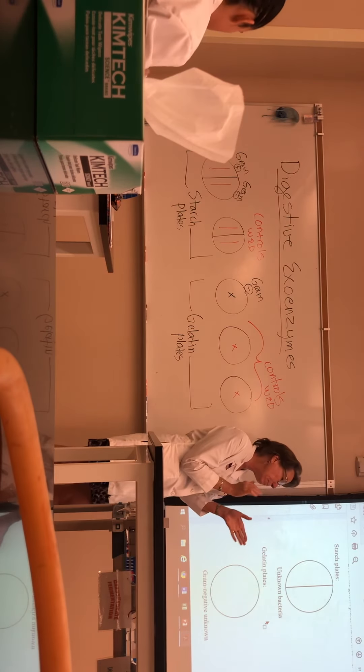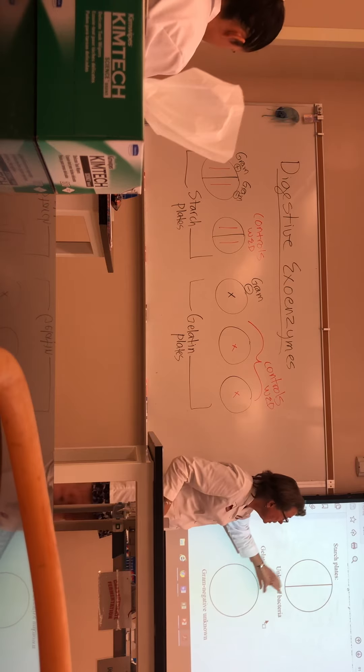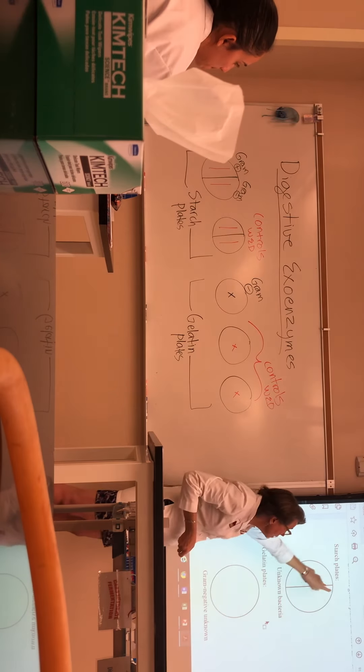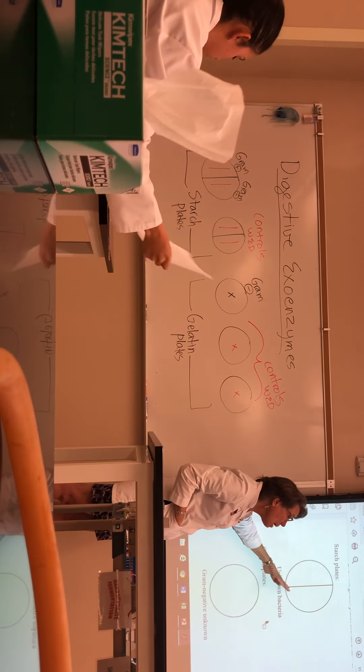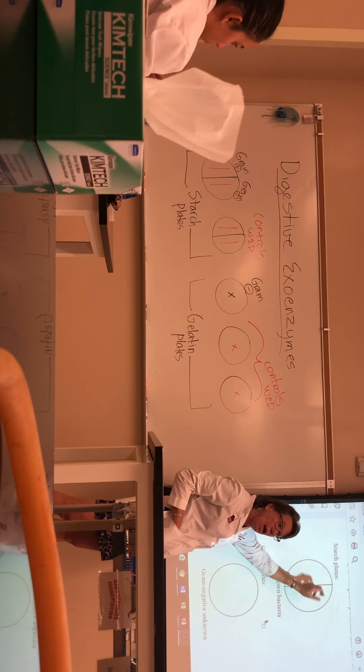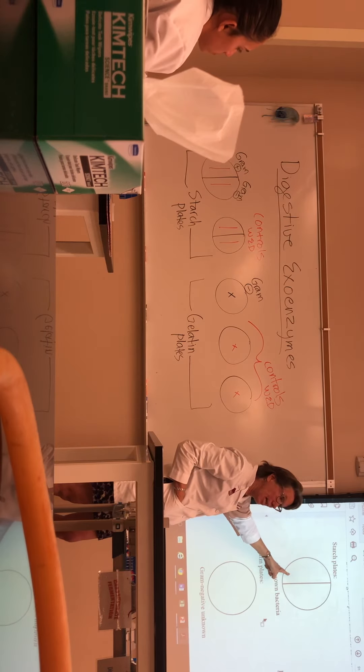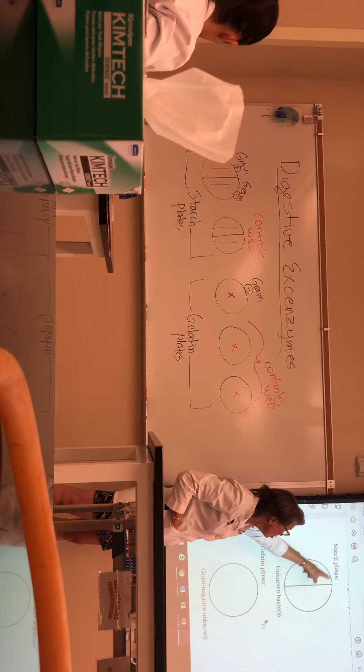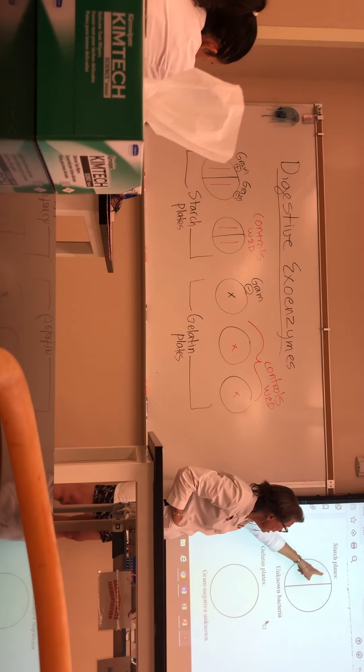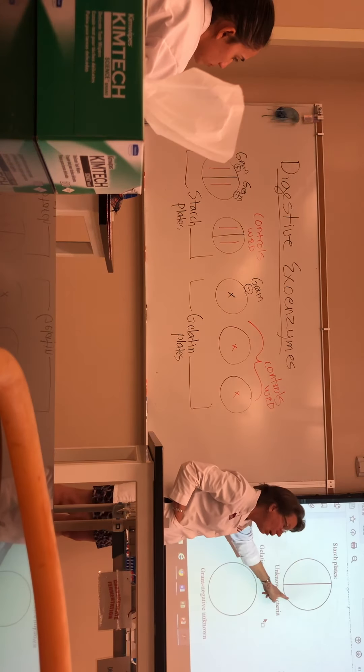You'll need one starch plate and one gelatin plate. So listen carefully though. You set them up a little differently. For the starch plates, you're going to take the plate and on the bottom put a wax pencil line, divide it in half and label it. One side for your gram positive, one side for your gram negative. And when you inoculate them, you're going to inoculate them in a straight line like that. Don't squiggle it like that. You want a straight line so they don't grow and meet each other in the middle. So a straight line of your gram positive on one side, a straight line of your gram negative on the other side.